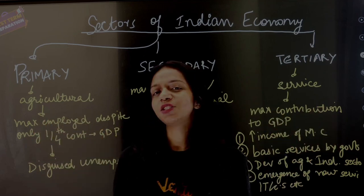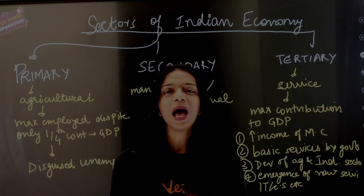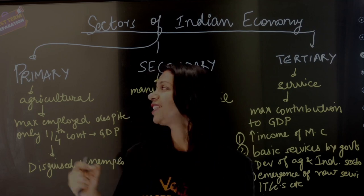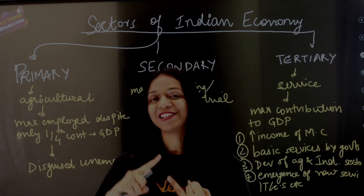Primary sector is also called the agricultural sector because here you have all the activity associated with raw material. For example, agriculture and mining.